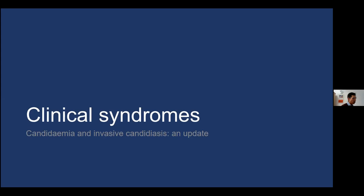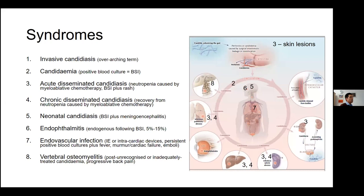In terms of clinical syndromes, most of us are familiar with candidemia, but there's a lot more to it than just a positive blood culture. Invasive candidiasis is the overarching term. Candidemia means a positive blood culture or bloodstream infection, accounting for more than 50% of all cases in epidemiological studies and clinical trials — that makes sense because a positive blood culture is easy to define. Attributable mortality with candidemia is around 15 to 20%.